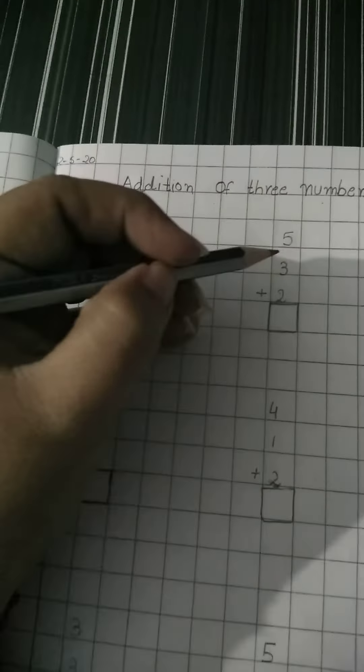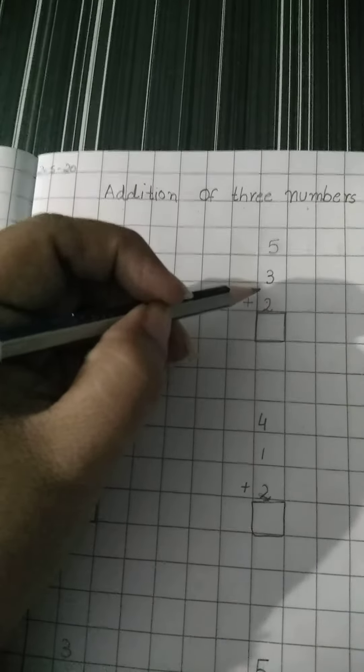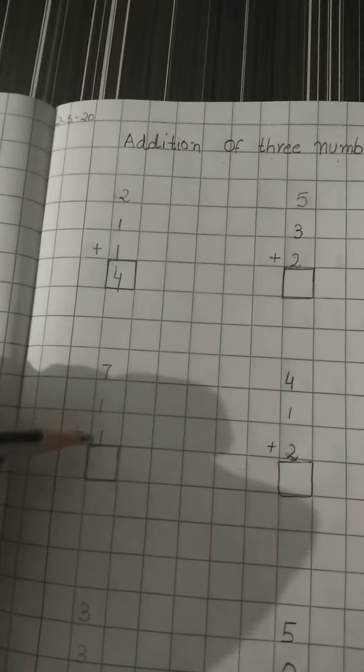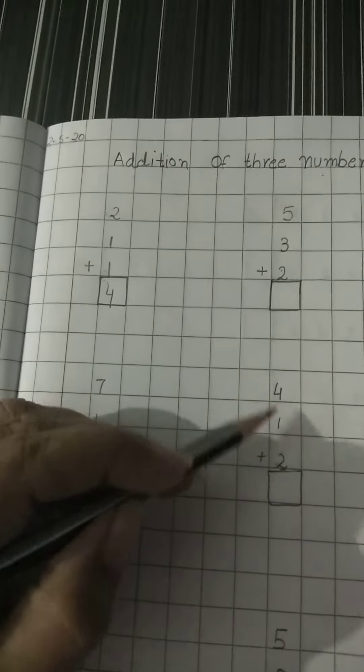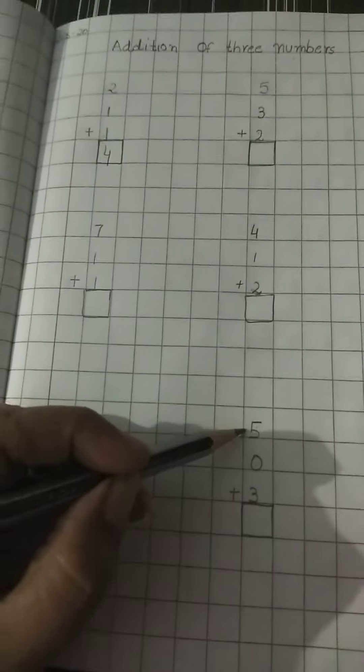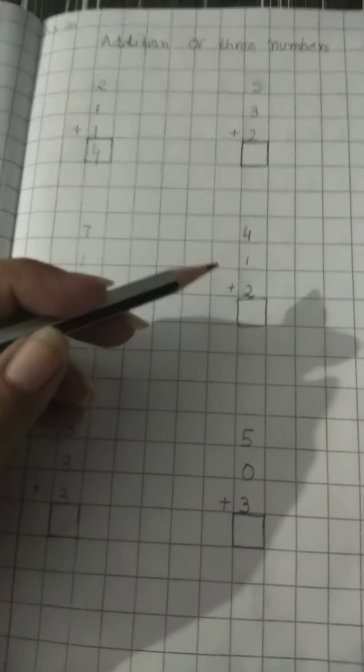In the same manner, you can see over here 5, 3, 2. Then the next number is 7, 1, 1. Then 4, 1, 2. 3, 3, 3. Then 5, 0, 3. You have to add and do this exercise by your own. In the same manner.